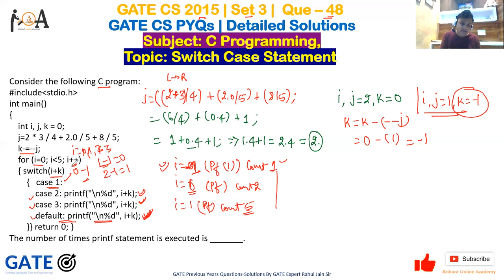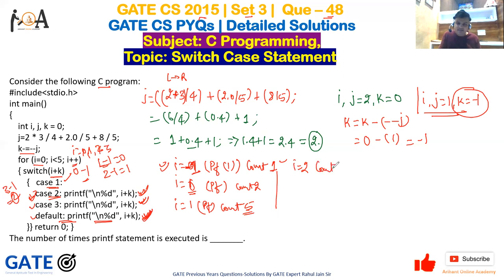i is incremented to 3. switch(i + k) = 3 + (-1) = 2. Case 2 is matched; execution runs through case 2, case 3, and default — three more printf statements. Count goes from 5 to 8.